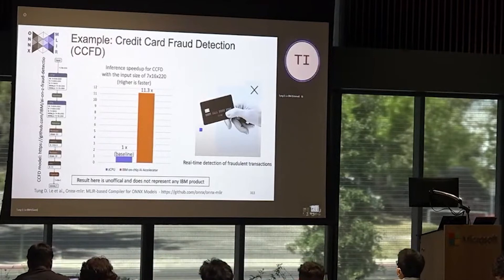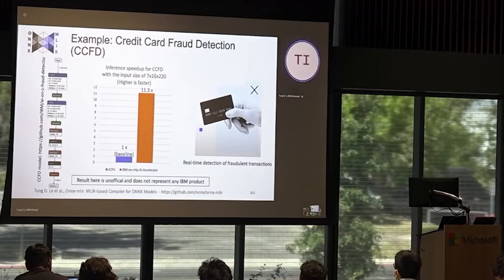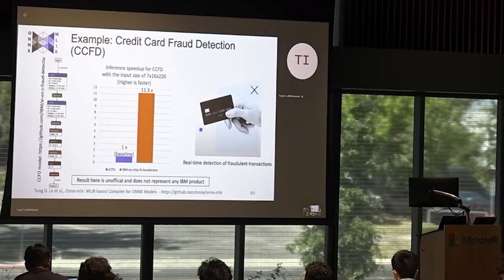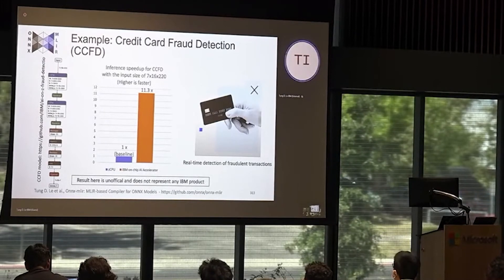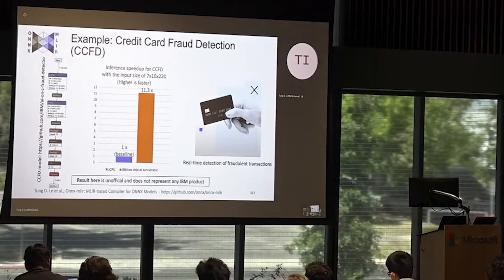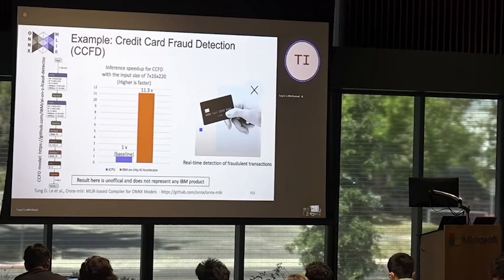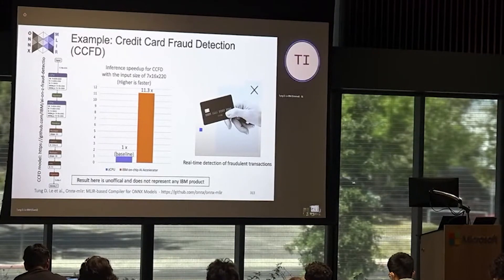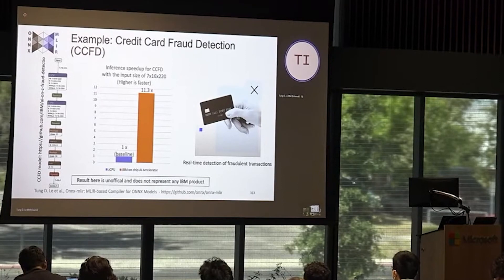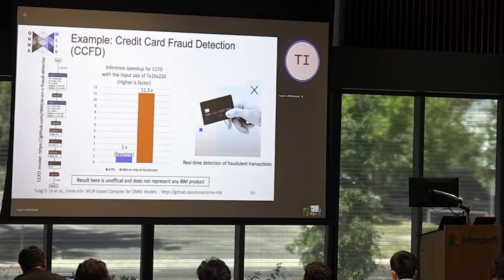Finally, we would like to show how accelerators have sped up inference for a practical model: credit card fraud detection. This model is used for real-time detection of fraudulent transactions. We ran experiments on IBM z16 compared to running on CPU as a baseline, and using the accelerator is about 11 times faster. We cannot disclose more detail as it is related to an IBM product, but what we want to show is that the accelerator framework in the compiler works in practice.